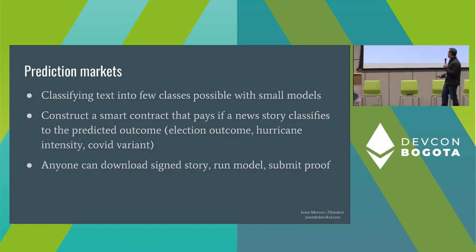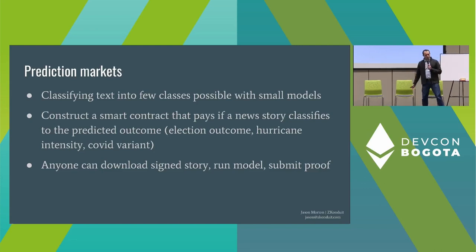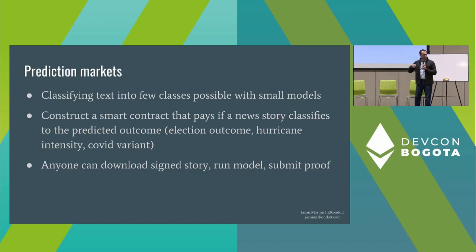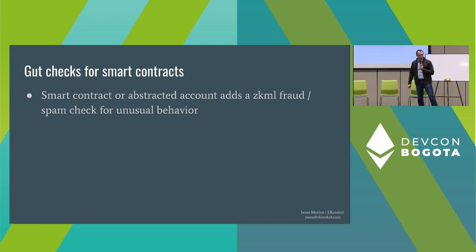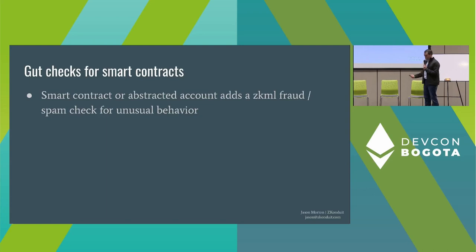Prediction markets are another application. You could set up a contract that pays if a news story classifies to a particular thing — someone won an election, a hurricane of a certain intensity hit a coast, a car received a lot of damage — and a small classification model, because there are relatively few classes, can decide whether that happened. Anyone can download the signed story, run the model, and submit the proof. There are also fraud checks: a smart contract could have a ZKML check that acts as a rate limiter and fraud check, making it harder to scam that contract — a proof of humanity, for example, or checks of the state of the network.